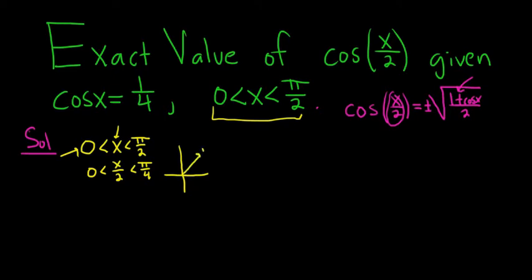So on the unit circle here's pi over 4, and here's 0. So x over 2 is an angle that's here. So on the unit circle cosine is the x coordinate. So that means that cosine should be positive because it's in quadrant 1 and the x coordinate is positive in quadrant 1. So in this example we're going to use the plus for the formula.